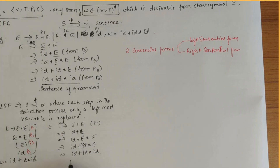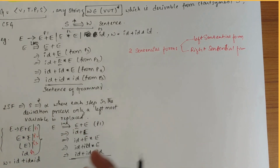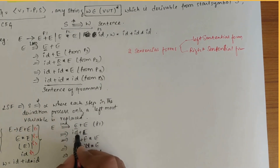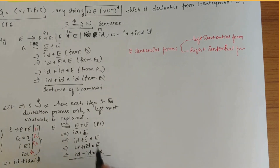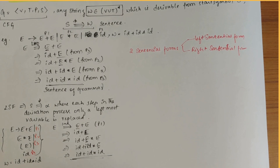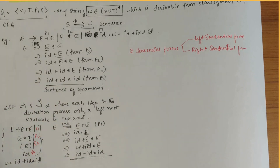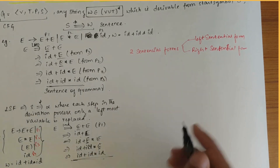In the above leftmost derivation, the string of grammar symbols obtained at each step — E plus E is changed to id first (the leftmost is changed), then this E is changed, then this E is changed. This sort of LMD derivation in the sentential form topic is referred to as the left sentential form.